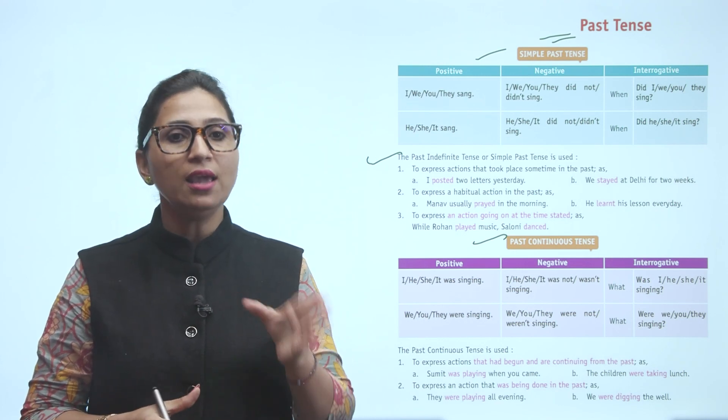If your subject is you, we, they, the helping verb will be 'were' in positive sentence. And with the main verb, you add '-ing.' In negative, for I, he, she, it, you use 'was not' - 'not' for negative, then 'wasn't.'